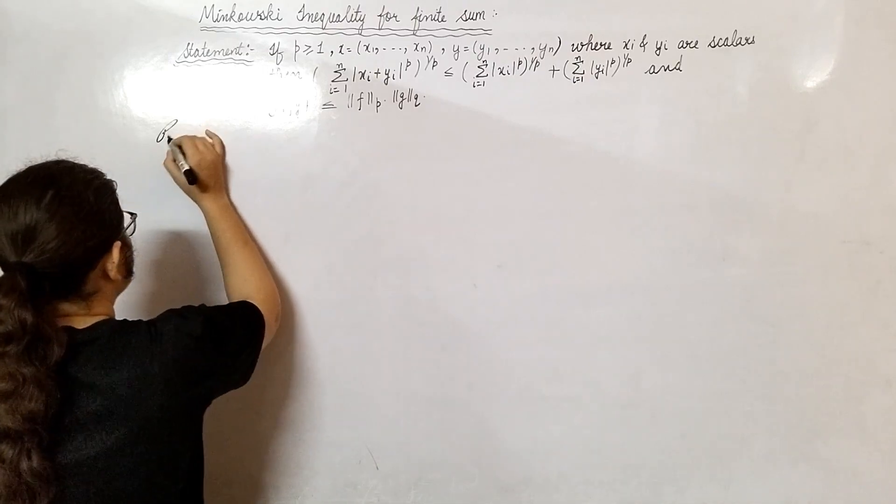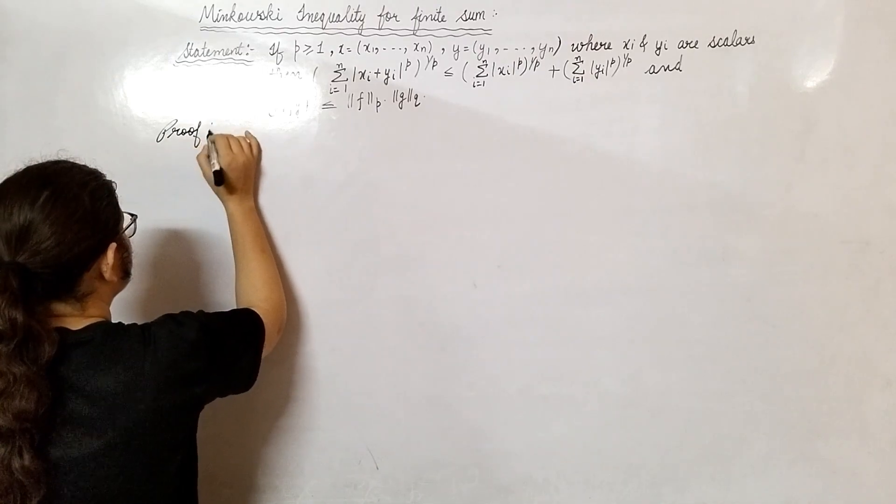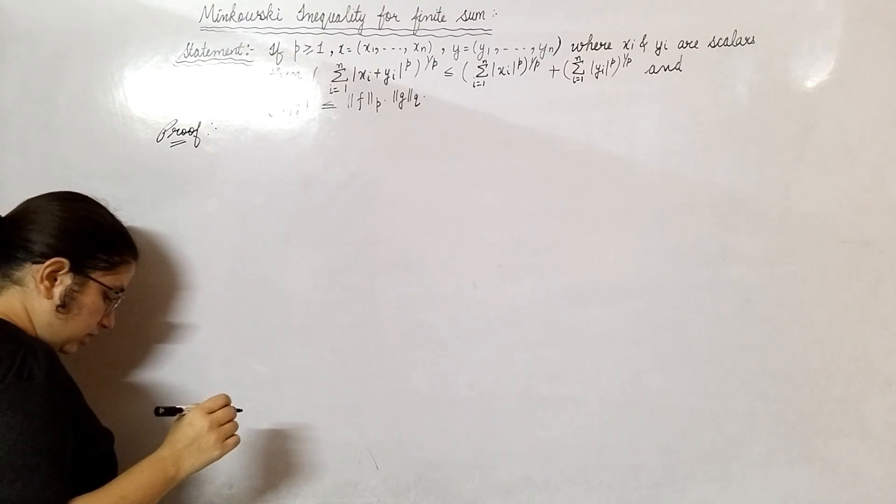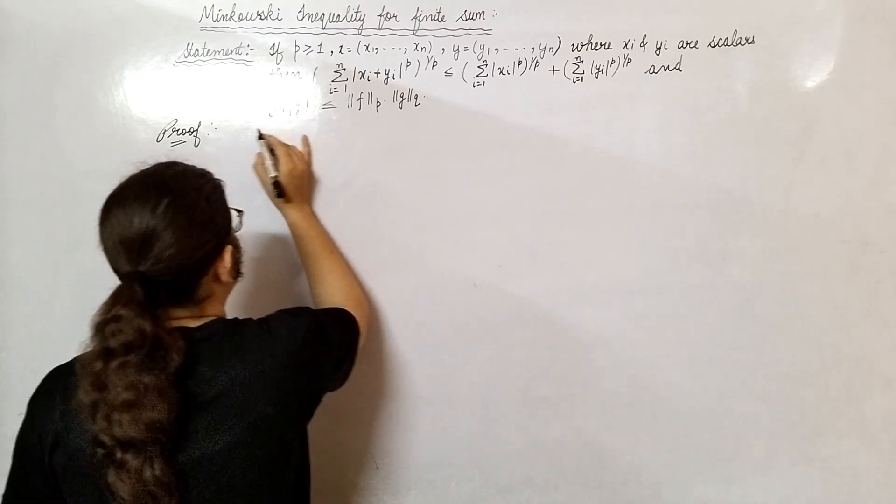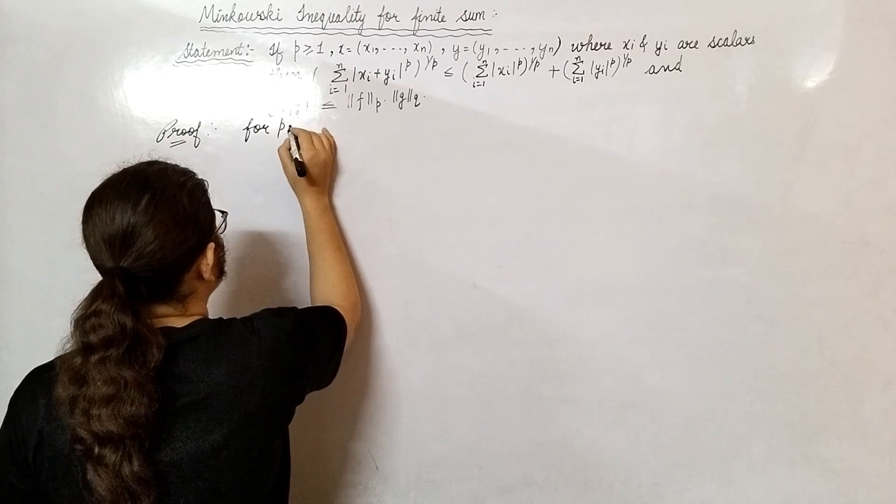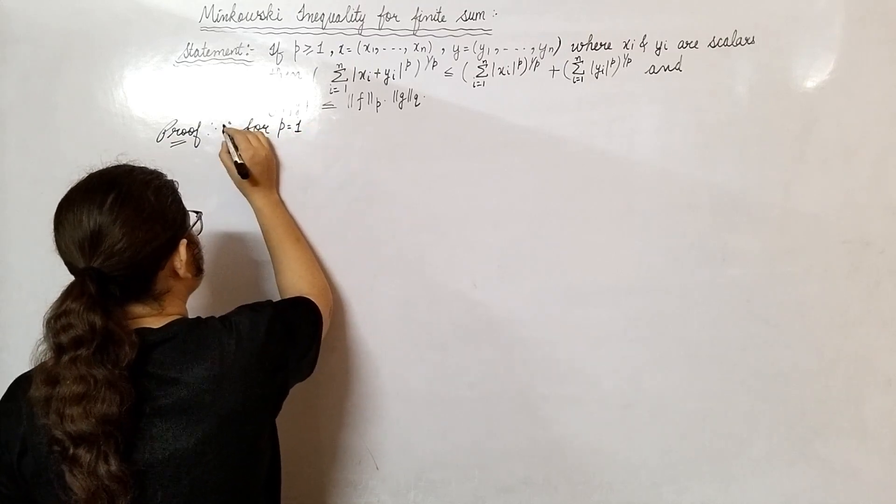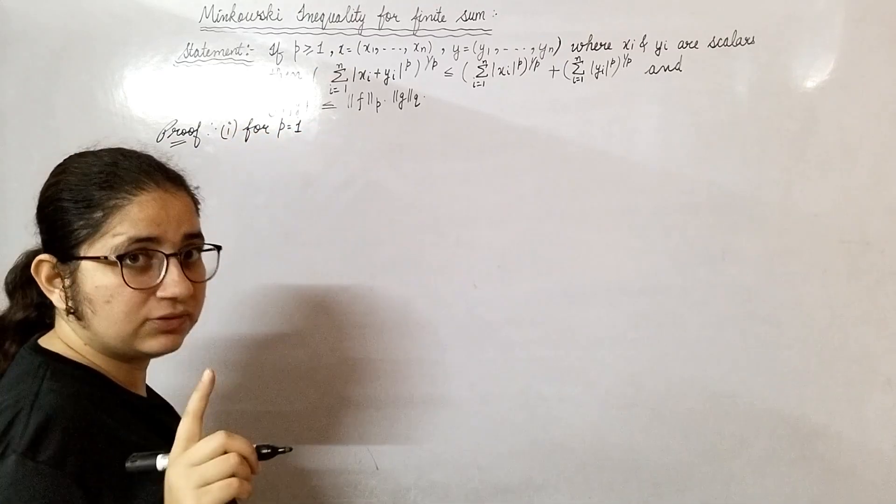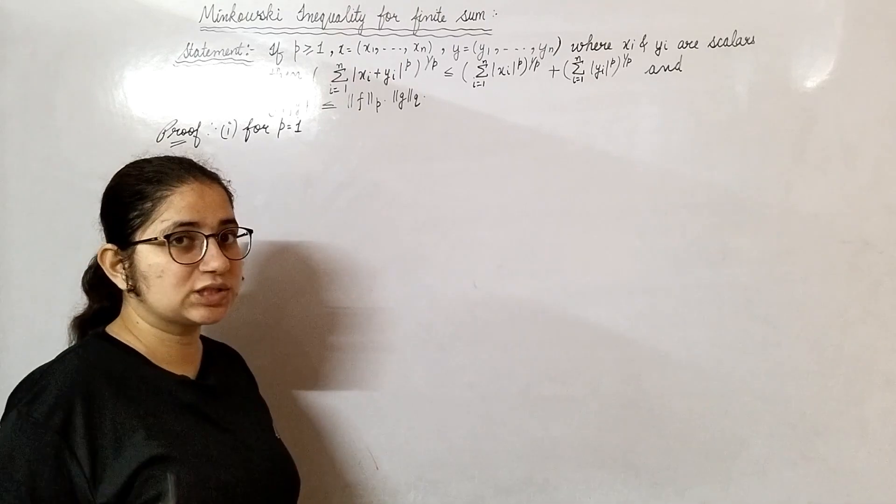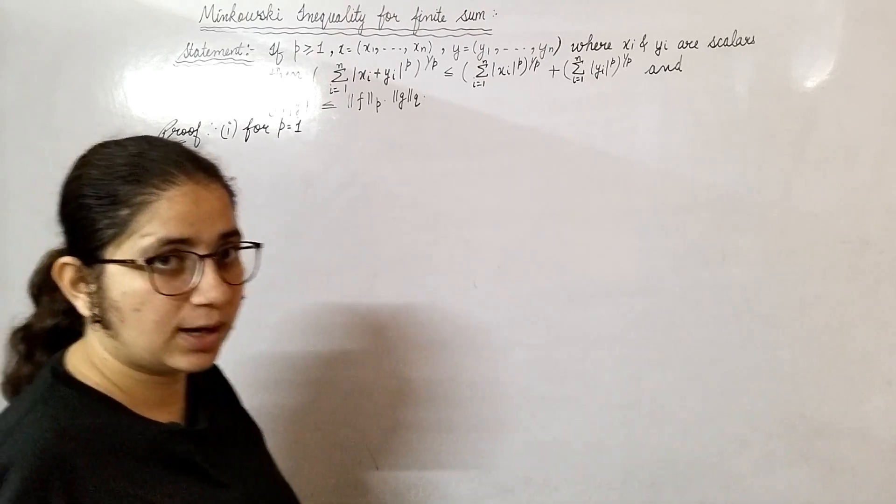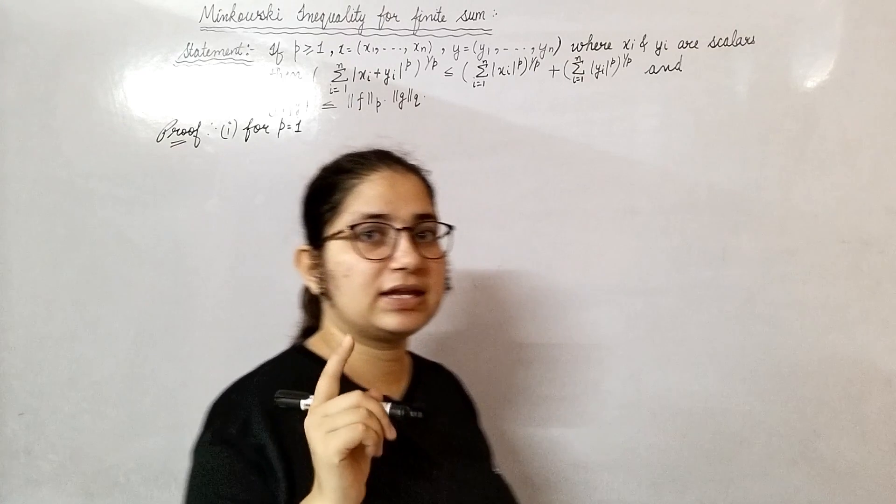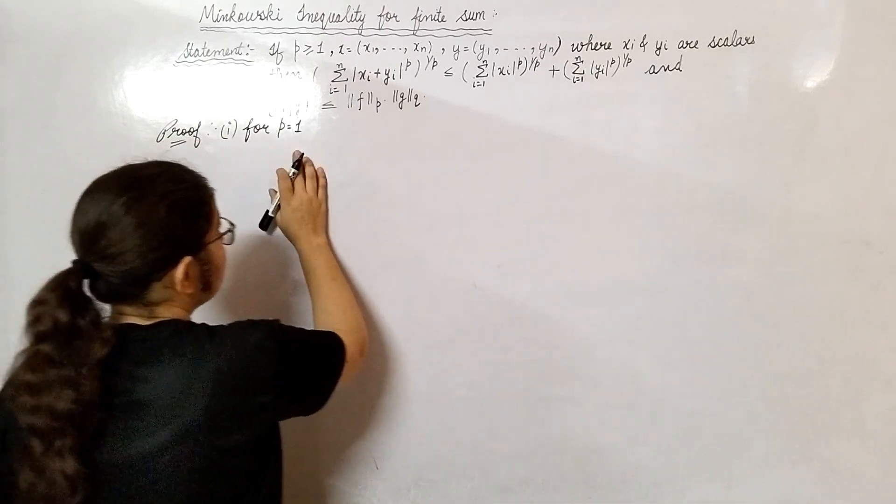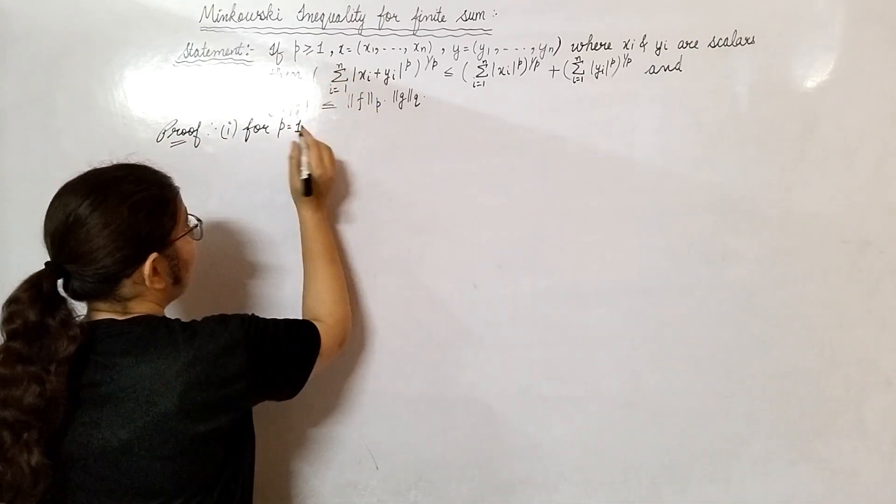Now proof is for p greater than or equal to 1. Case 1: p equals to 1. So we will make two cases. First one is when p is equal to 1, and second case is when p is greater than 1. So first case, p is equal to 1. Then what we have?